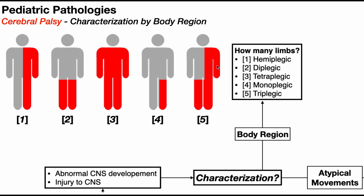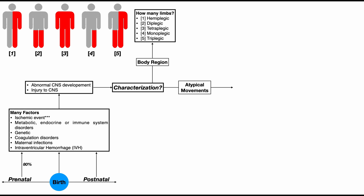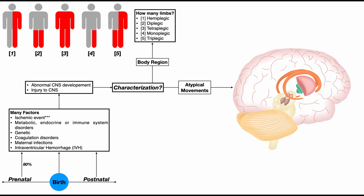Now let's get into classification by atypical movements. The atypical movement pattern that presents depends on which part of the brain has been affected. One of those atypical movement patterns is caused by spastic cerebral palsy. In spastic CP, it's the motor cortex that is most affected, and this typically presents with hypertonus and spasticity.